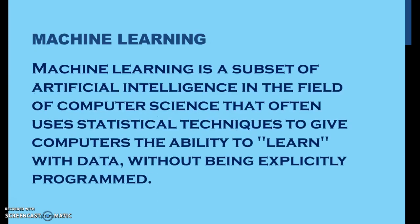Machine learning, as the definition goes, is a subset of artificial intelligence in the field of computer sciences that often uses statistical techniques to give computers the ability to learn with data without being explicitly programmed. We need to understand clearly that it gives the machine the ability to learn from the past data, and the future decisions of the machine are going to be influenced by that past data.